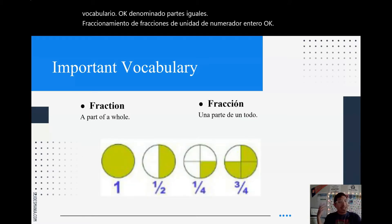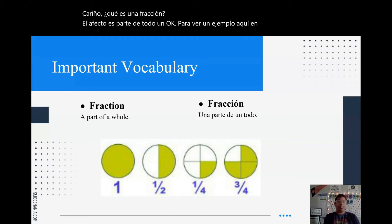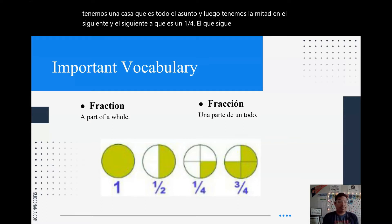A fraction. What is a fraction? A fraction is a part of a whole. For an example, here in this picture, we have one whole, which is the whole thing, and then we have a half on the next one, and the one next to that is one-fourth. The one after that is three-fourths. So they're part of a whole. It's all the same slice, the same whole, but this time it's part of something, part of the whole.